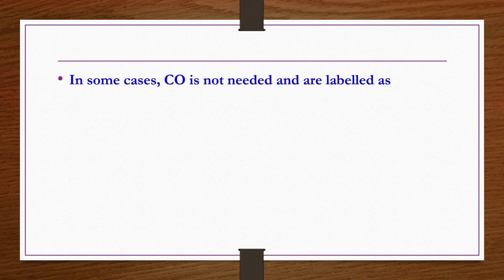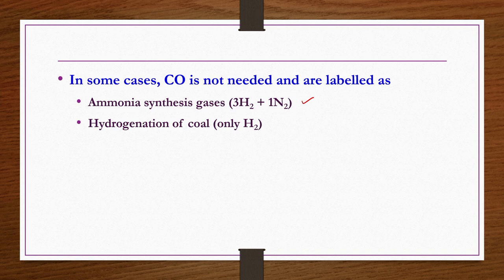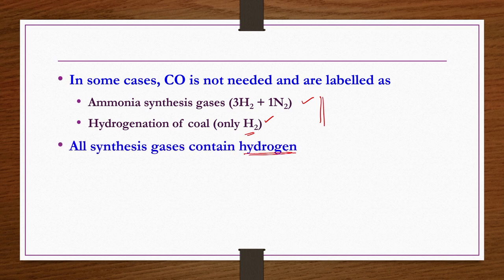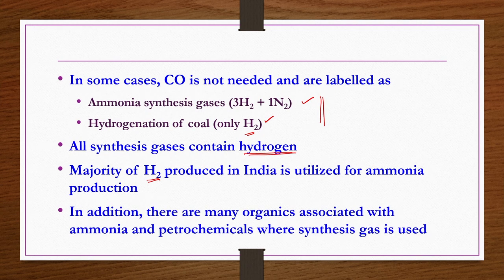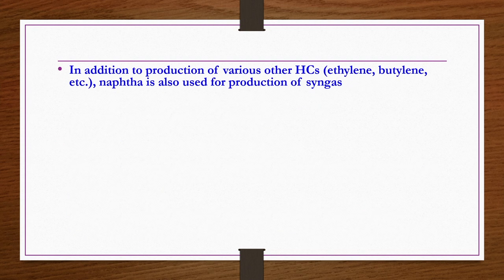In some cases carbon monoxide is not needed — these are labeled as ammonia synthesis gases, having hydrogen and nitrogen, or hydrogenation of coal having only H2. All synthesis gases contain H2, whether ammonia synthesis gas, proper synthesis gas, water gas or coke oven gas. The majority of H2 produced in India is utilized for ammonia production. Naphtha is also used for production of syngas, as well as for other hydrocarbons like ethylene and butylene.